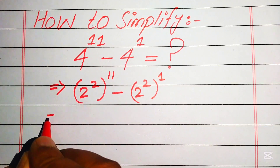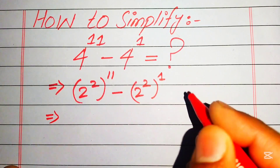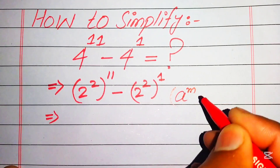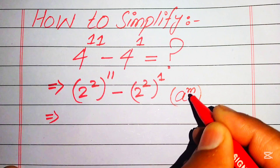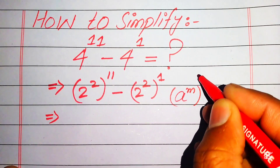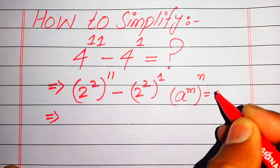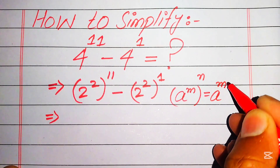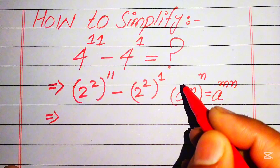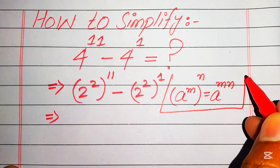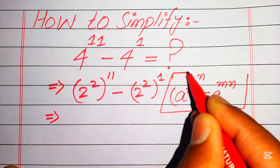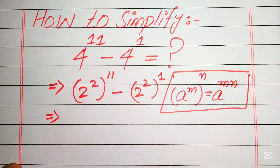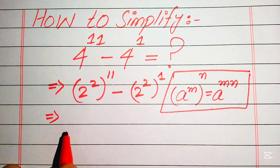Now we need this nice exponential law: if we have a to the power of m, to the power of n, it equals a to the power of m times n.